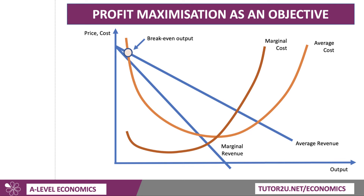Marginal cost cuts the average cost at the minimum of the AC curve. Now, there's a break-even output here where average revenue and average cost intersect — the firm covers its costs there. And there's another break-even output further down, again where average cost and average revenue meet. At those two points the firm is covering their costs, just making normal profit.